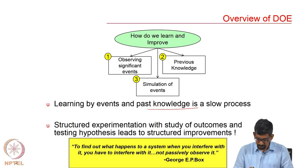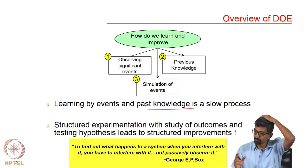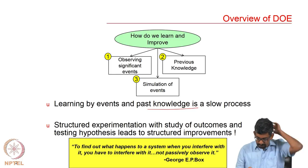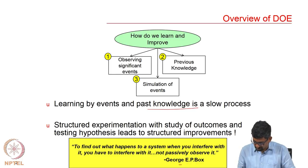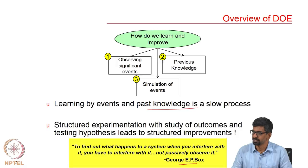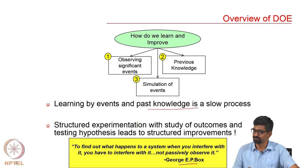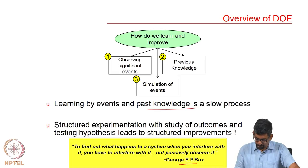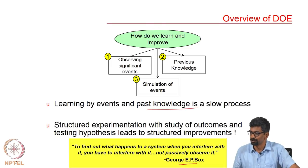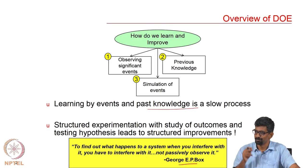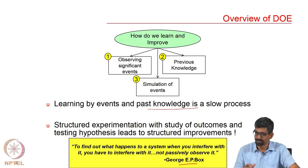Simulation helps. Structured experimentation with the study of outcomes will help you here. George E. Box is a very big statistician who has introduced a lot of design of experiment techniques. What he says is: to find out what happens to a system when you interfere with it, you have to interfere with it — not passively observe it. You cannot wait 100 years for a rare event to happen; you will have to perform it to understand what happens.